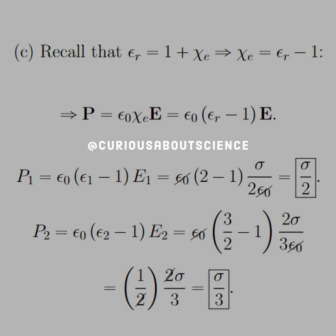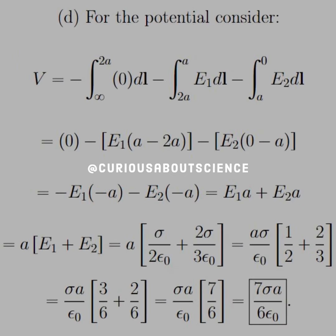Since we know what the dielectric constant is and we just found the electric field, we can find the polarization in slab 1 and in slab 2. With a little substitution and algebraic manipulation, we see that we get some canceling factors, and then we end up with our polarizations of sigma over 2 and sigma over 3.